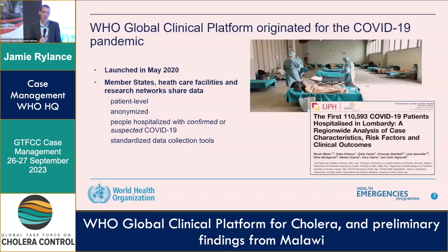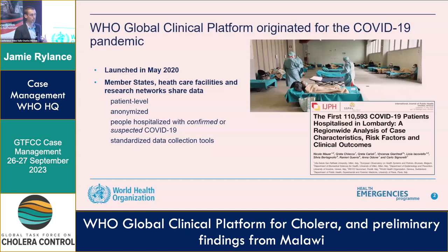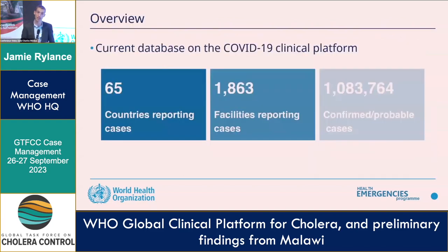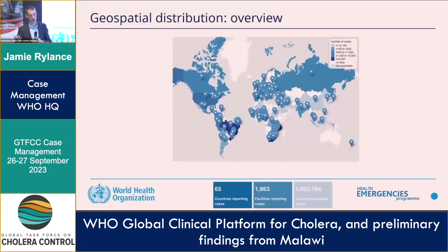The Global Clinical Platform came about during the COVID pandemic, launched in May 2020, offering member states or facilities the ability to bring together anonymized patient data with standardized data collection tools. A number of reports have come out looking at high-risk populations — those who are pregnant, those with HIV — and I think we can do the same for cholera. We can't match the over one million confirmed and probable COVID-19 cases, but we can bring a large number of countries or facilities together.